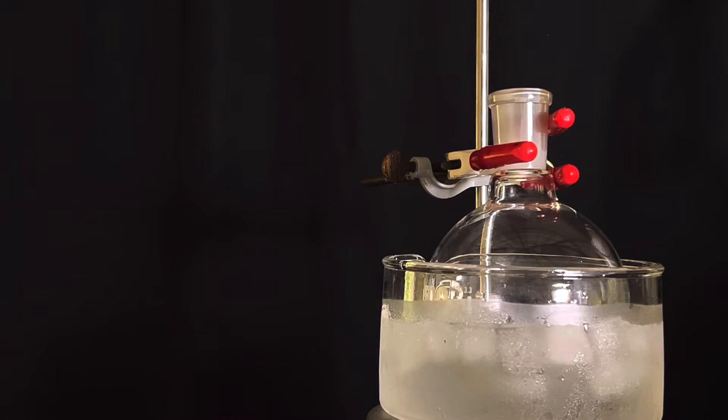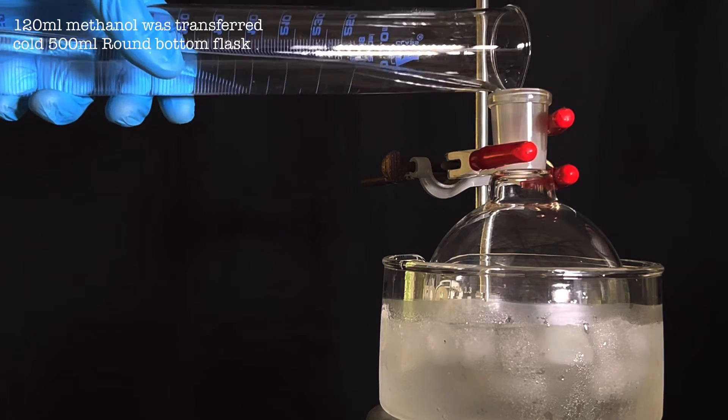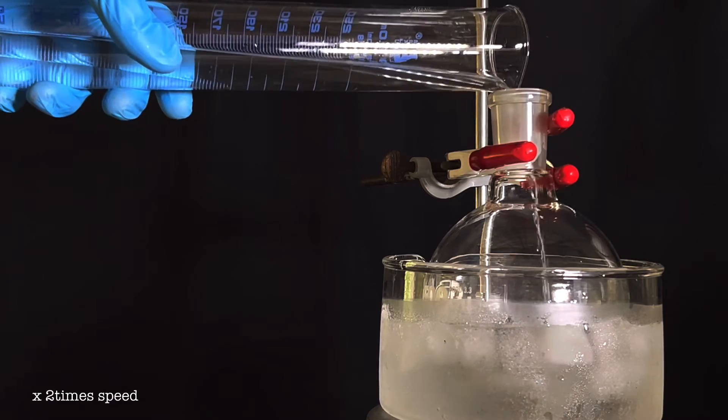Start by fixing a 500 ml round bottom flask on a stand inside an ice bath. 120 ml of methanol was added to the flask and the methanol was allowed to chill.